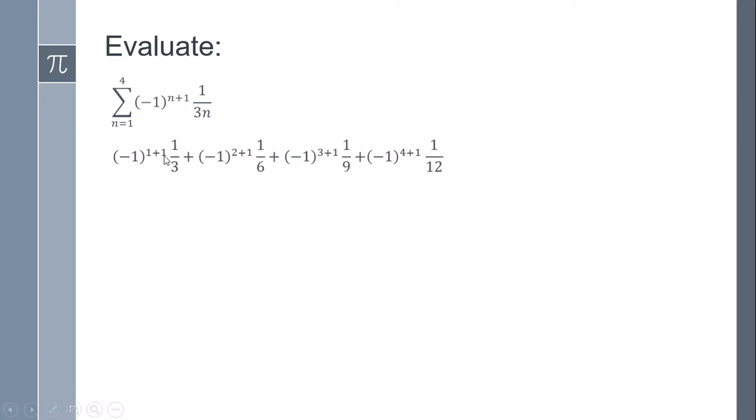So the first is going to be 1 plus 1, 1 times 3 is going to be 3. The second term is going to be 2 plus 1, and it's going to be 6. And the third is going to be 3 plus 1, and 3 times 3.